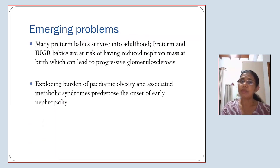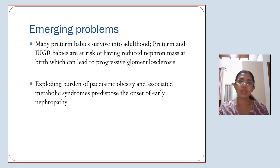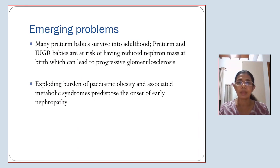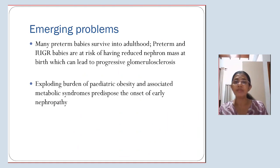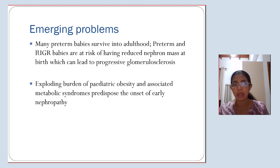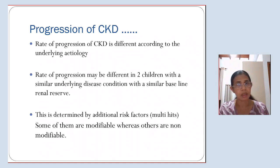Distribution patterns may change in future. With advanced neonatology services, many pre-term babies survive into adulthood. Pre-term and IUGR babies are at risk of having reduced nephron mass at birth, and it is well documented that reduced nephron mass causes hyperfiltration injury leading to progressive glomerulosclerosis. Additionally, the exploding burden of pediatric obesity and associated metabolic syndromes predisposes the onset of early nephropathy in susceptible individuals, and these risk factors may change the distribution patterns significantly.